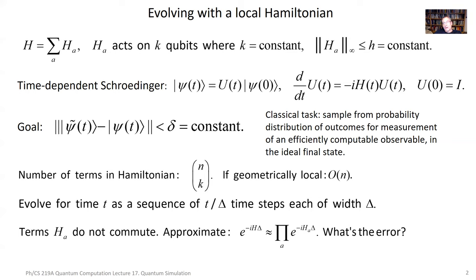As far as we know the number of spatial dimensions in the world is three, although whether physics is really geometrically local once we start worrying about the effects of gravitation is a subtle question. For the physics we understand best — like particle physics studied in high energy physics experiments — local Hamiltonians seem to be a quite adequate description. So we want to evolve for some time t using quantum gates, with a circuit of operations acting on the qubits.